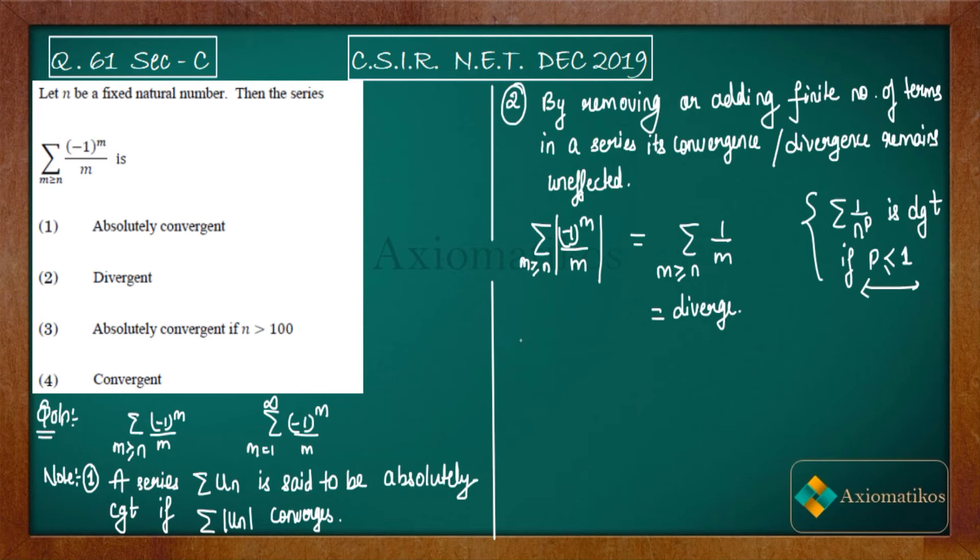So the first option is incorrect. Now see, the third option: we have absolute convergence if n > 100. We already know that by adding finitely many number of terms, we don't have any impact on convergence and divergence of the series. That is why the third is incorrect.